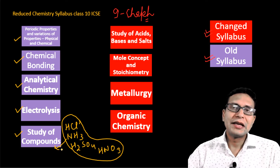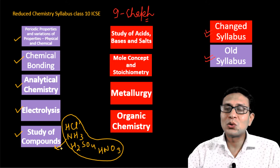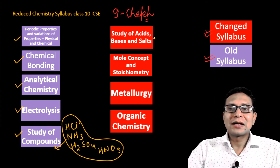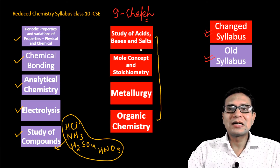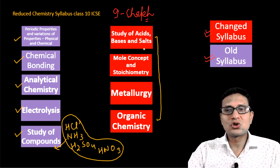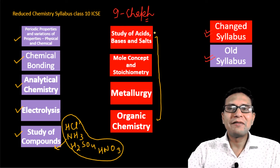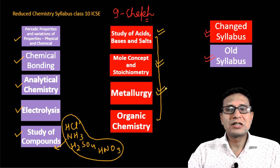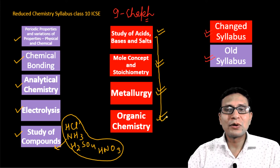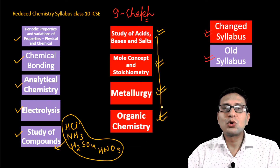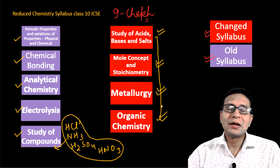These 4 topics in Study of Compounds have no change at all — you will read them exactly as before. However, these 4 chapters do have changes: Study of Acids, Bases and Salts; Mole Concept and Stoichiometry; Metallurgy; and Organic Chemistry. There are lots of things in these chapters that you now have to leave. I will tell you exactly about each chapter, and you can also find the full write-up in the description box.